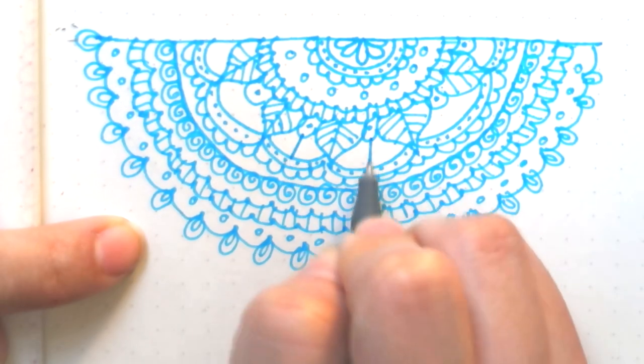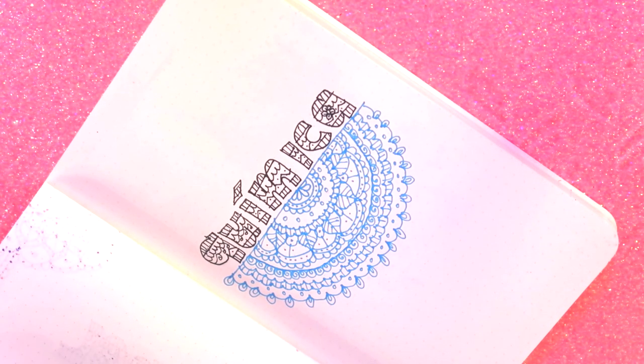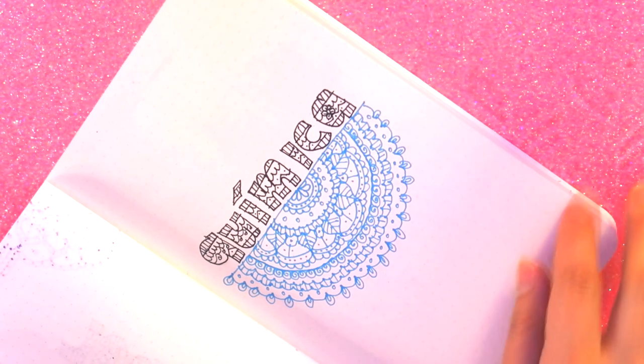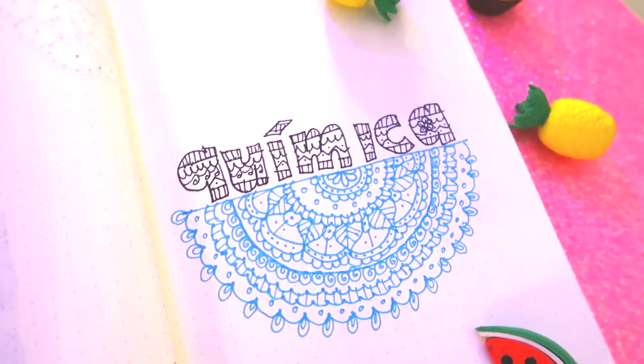We finish with some dots and these little lines. We put the name of chemistry or whatever subject you're going to use and that's how it looks. For all these covers I'm going to use the same type of alphabet.